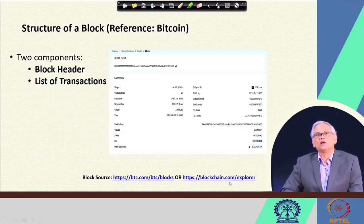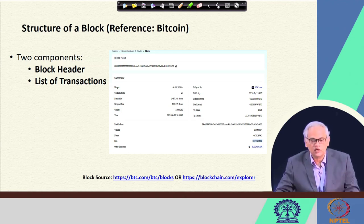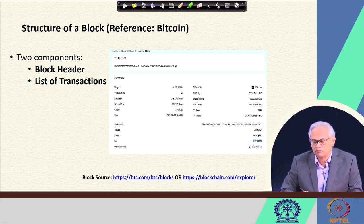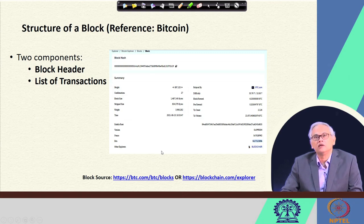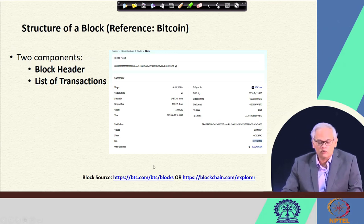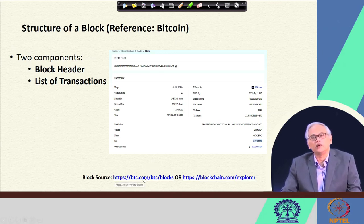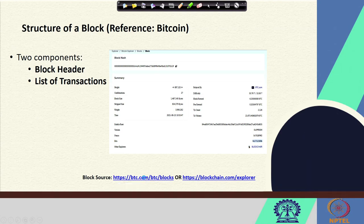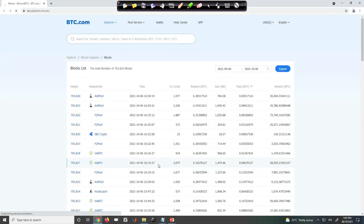A block has two components: a block header and a list of transactions. Here we have given an example of a block header — we don't need to see it closely here; instead we will go to websites where we have all the block details. Let us go to btc.com and see.